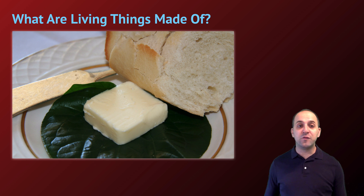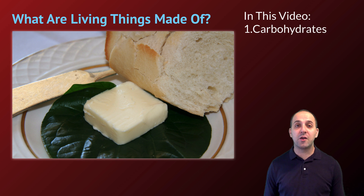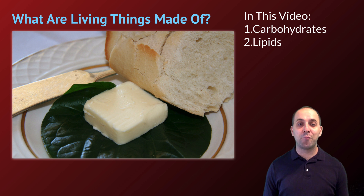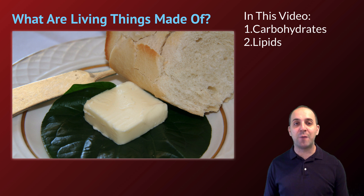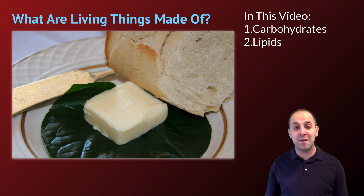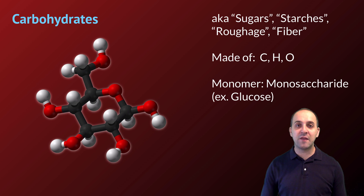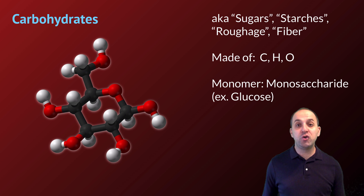The question we're going to answer over these next two videos is: what are living things made of? In this video we're going to spotlight carbohydrates and lipids. I have a picture of bread and butter because that's a good example of both — carbohydrates are found in the bread, and lipids are found in the butter.